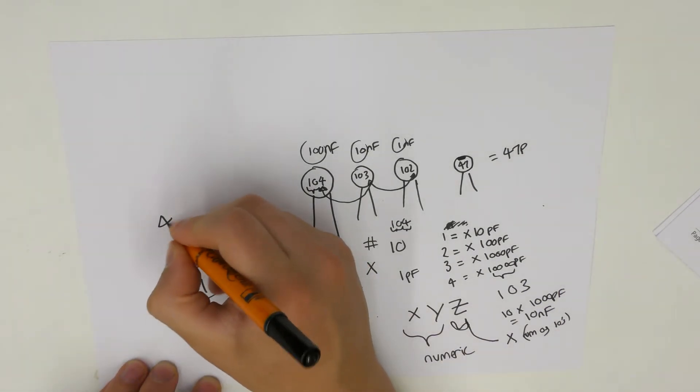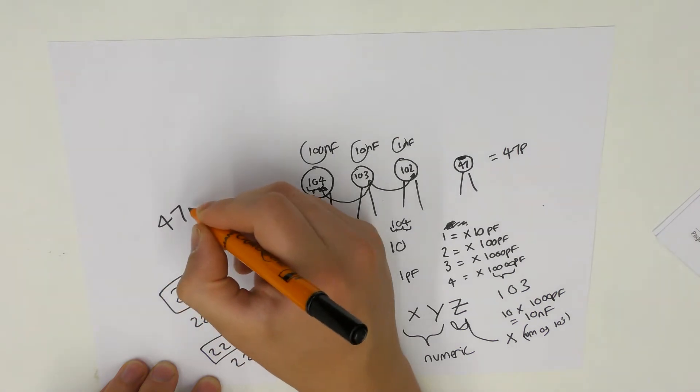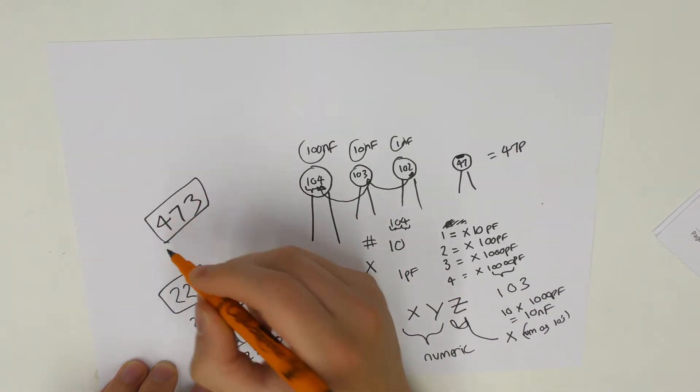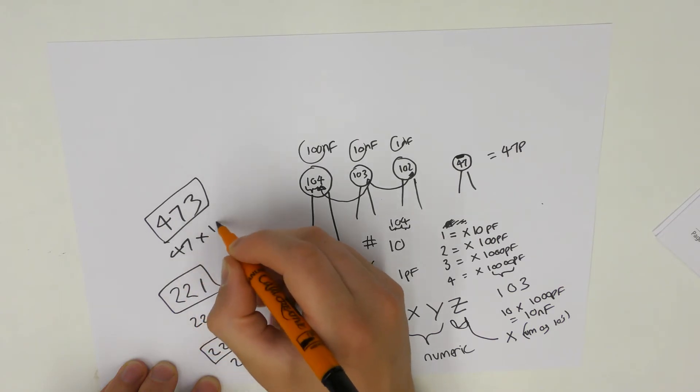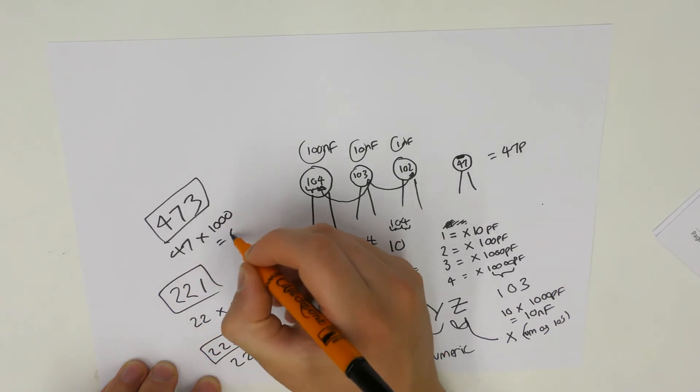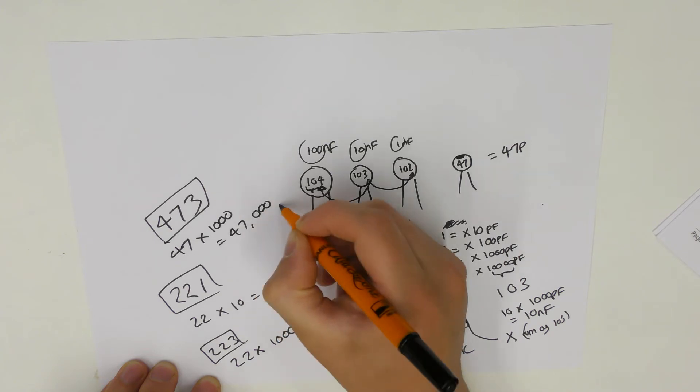If it was, say, 473, it would be 47 multiplied by 1, 2, 3, which is equal to 47,000 picofarads, which equals 47 nanofarads.